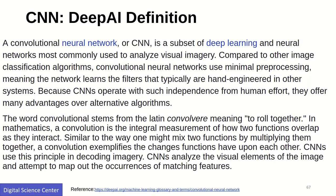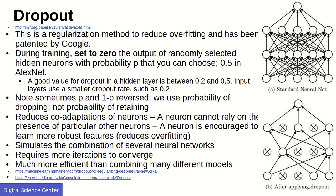We'll be discussing more about convolutional neural networks — how you create a filter, how each filter works doing convolution over an image, and how features are extracted. That's the basic definition of convolution. Now let's discuss dropout.